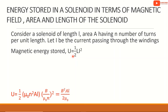So U equals half L I². We have already studied this. The self-inductance L equals μ₀·n²·A·l, where n is the number of turns per unit length, A is the area, and l is the length of the solenoid.